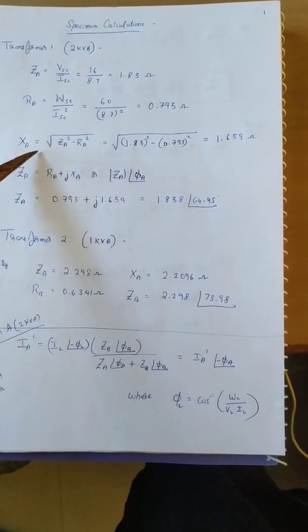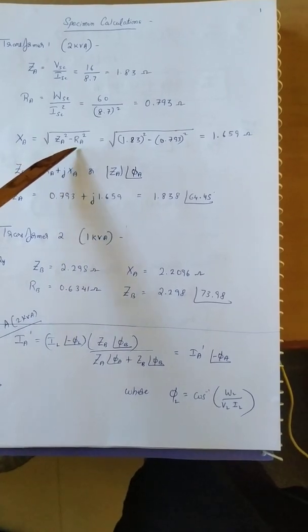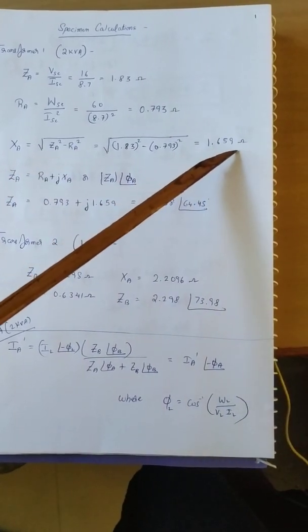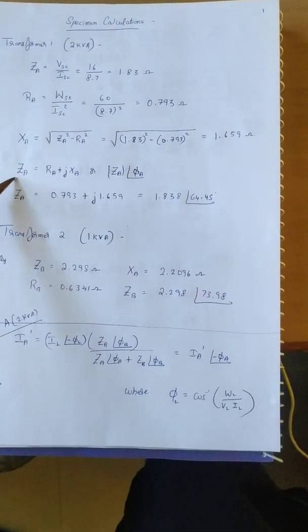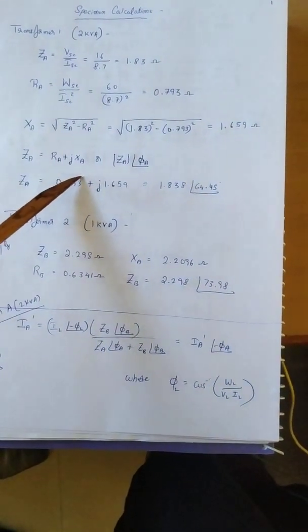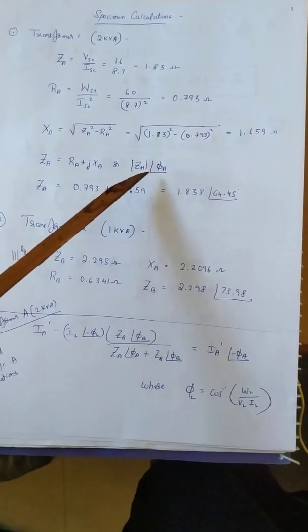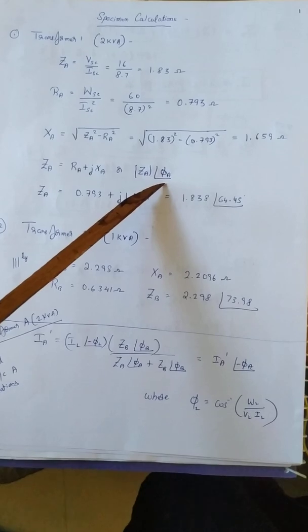Then we calculate the reactance XA which is given by root of ZA square minus RA square. If we substitute the values we will be getting 1.659 ohms. Impedance is given by R plus JX in general. If we express the same in polar form we have magnitude at an angle, ZA at an angle phi A.